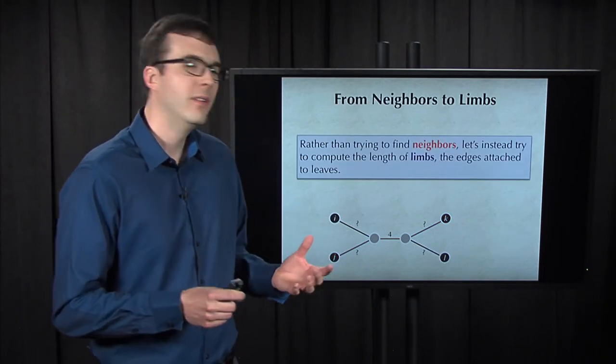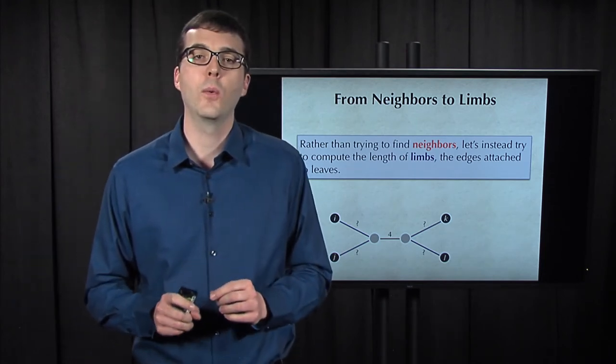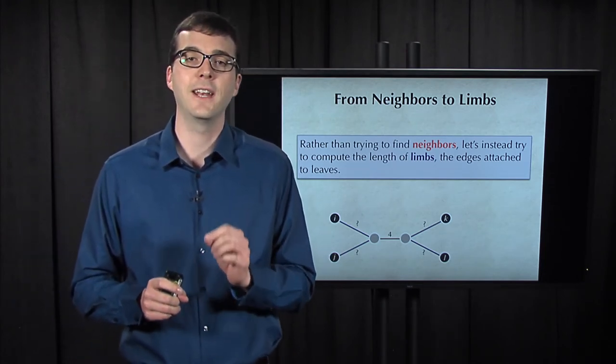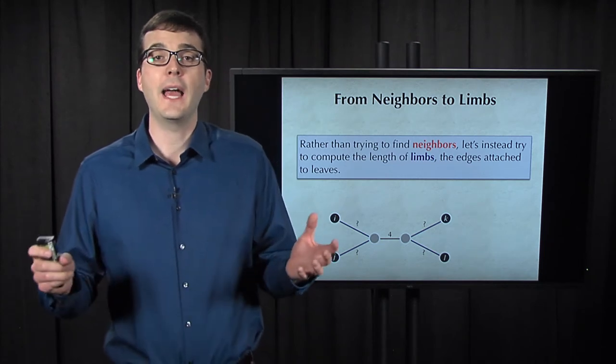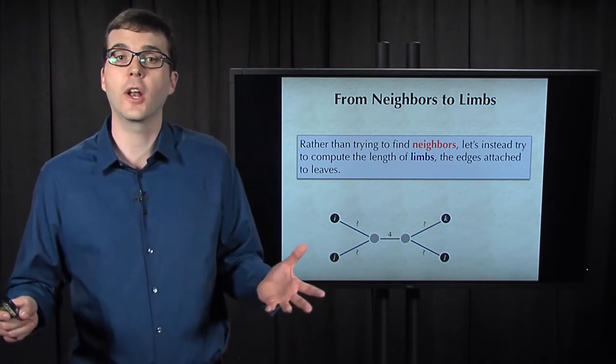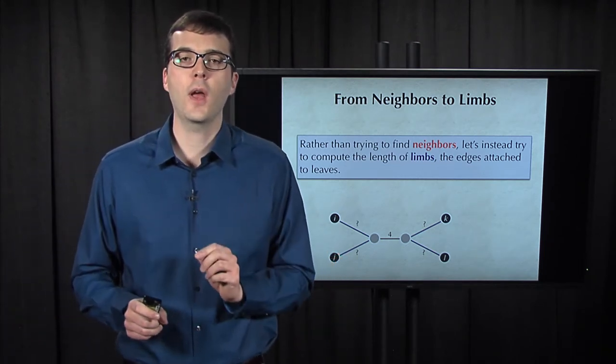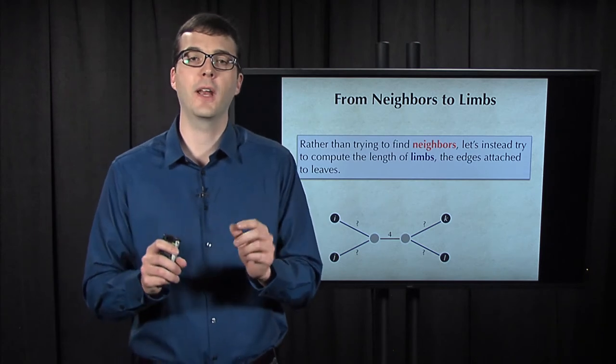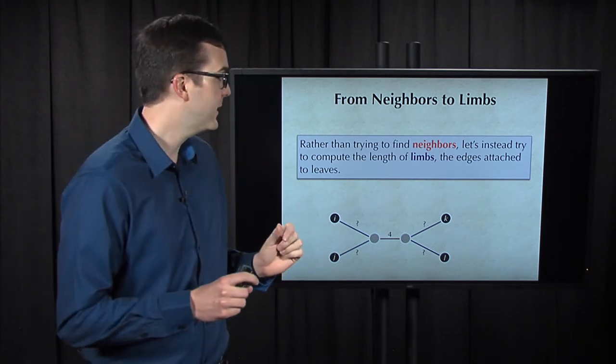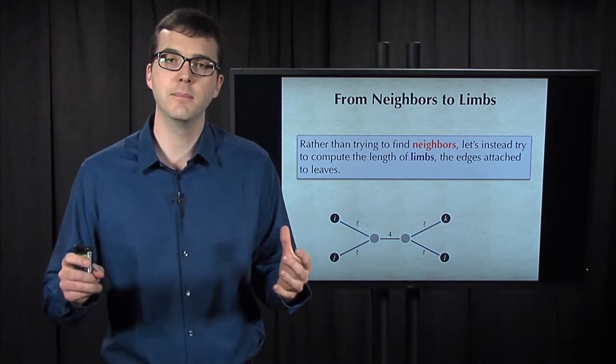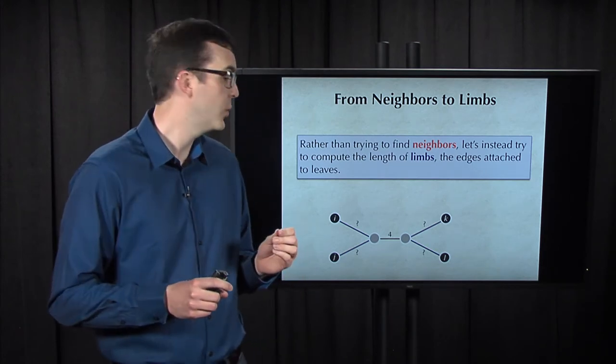For now, let's not lose hope for a method that will reconstruct a tree that fits an additive distance matrix. The idea that we had of using recursion was a good idea. But rather than trying to reduce the size of the tree by finding a pair of neighbors, let's instead try and compute the length of limbs or the edges that are connected to a tree's leaves.